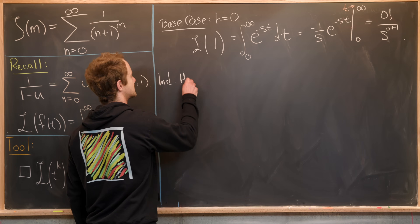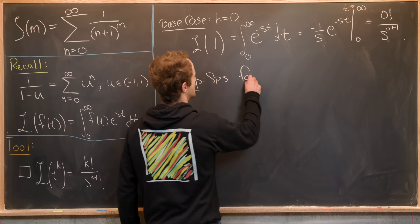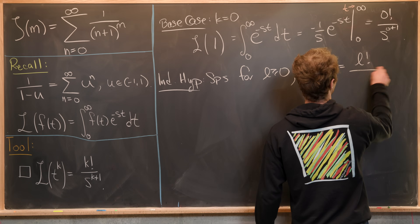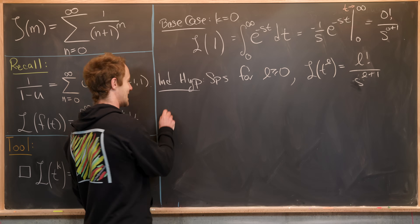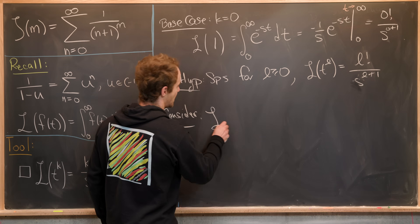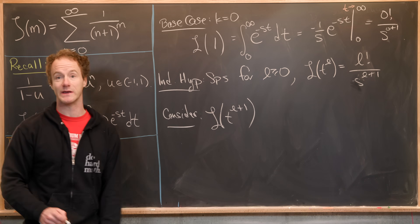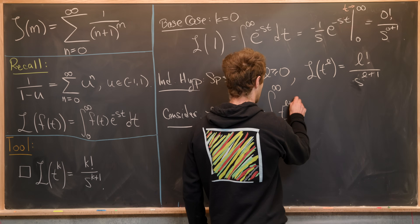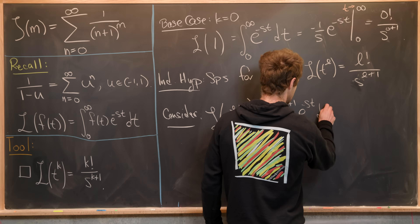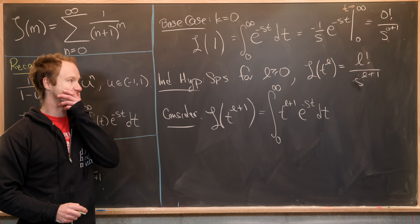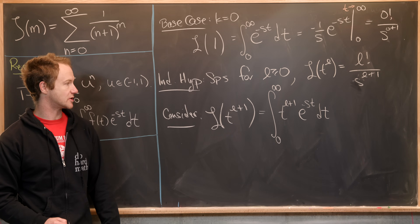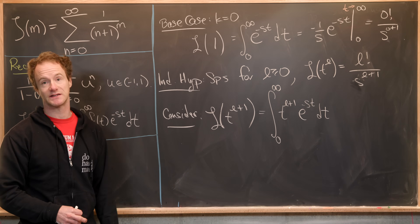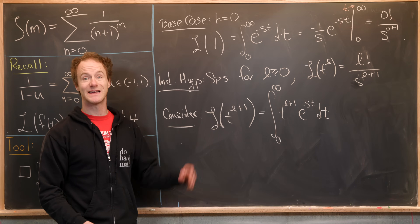Now let's make our induction hypothesis: suppose for some l greater than or equal to 0, the Laplace transform of t to the l equals l factorial over s to the l plus 1. We want to consider the next case — the Laplace transform of t to the l plus 1. By definition, that's the integral from 0 to infinity of t to the l plus 1 times e to the minus st dt. That's a polynomial times an exponential function, so we use integration by parts — the standard strategy for a polynomial times a transcendental function.